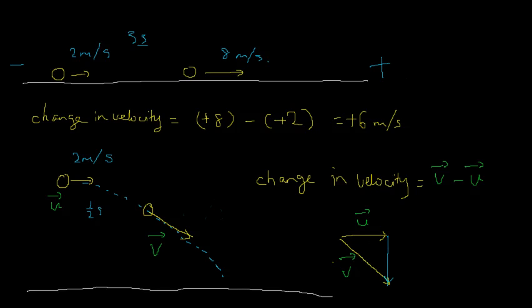It seems a little abstract, but we'll understand the reason later when we study forces and Newton's laws. We'll learn that a change in velocity occurs when there is a force. In this case, we do have a force — the force of gravity pulling the ball down, which is the ball's own weight. This change in velocity is caused by that weight. And in fact, Newton's laws tell us that the change in velocity is in the same direction as the force.